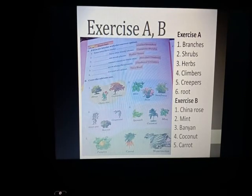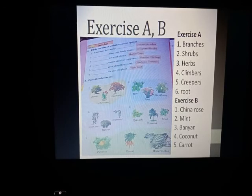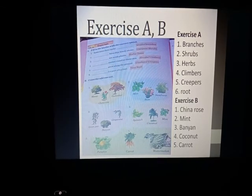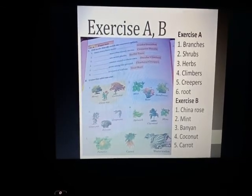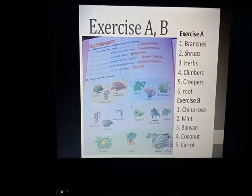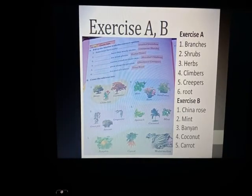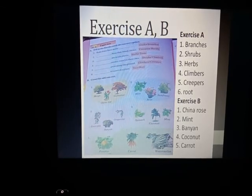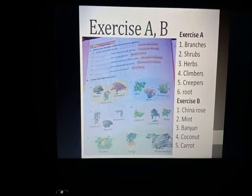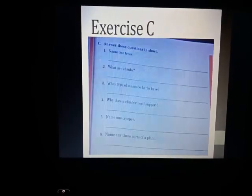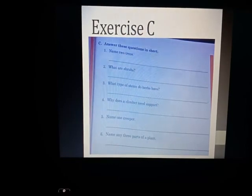In the second group, mint is a herb while the other two are shrubs, so cross the odd one. Next, the banyan tree is a tree while the other two are climbers — cross the banyan tree. In another group, spinach and mint are herbs while coconut is a tree — cross the coconut. Finally, pumpkin and watermelon are creepers but carrot is not, so cross the carrot.